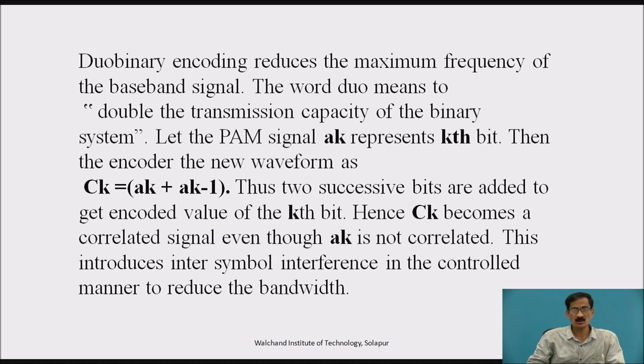Then the encoder, the new waveform is CK equals AK plus AK minus 1. Thus two successive bits are added to get encoded value of the kth bit. Hence, CK becomes a correlated signal even though AK is not correlated.